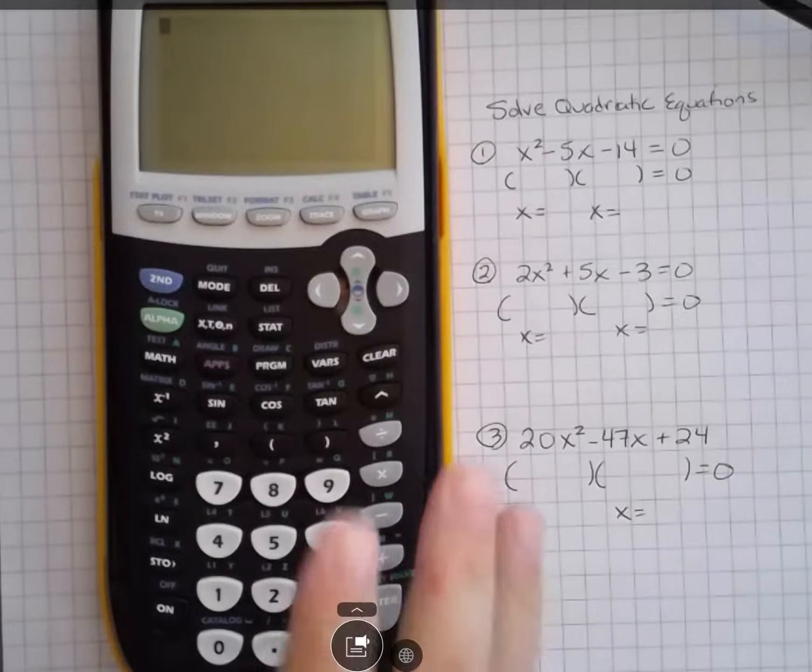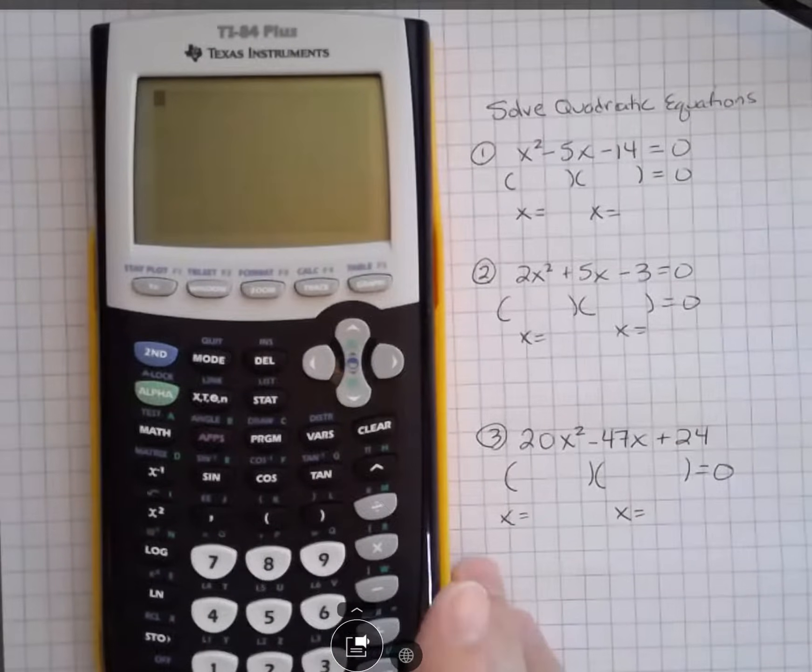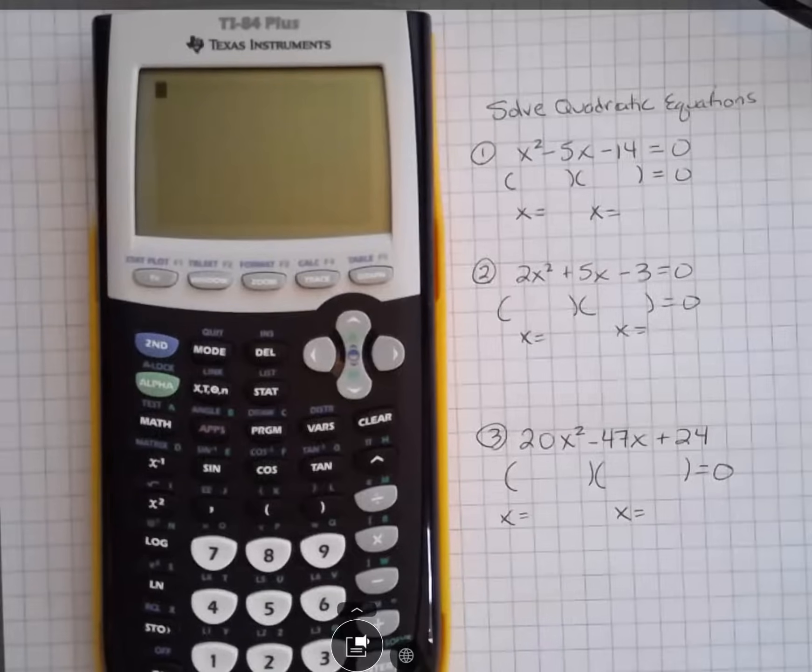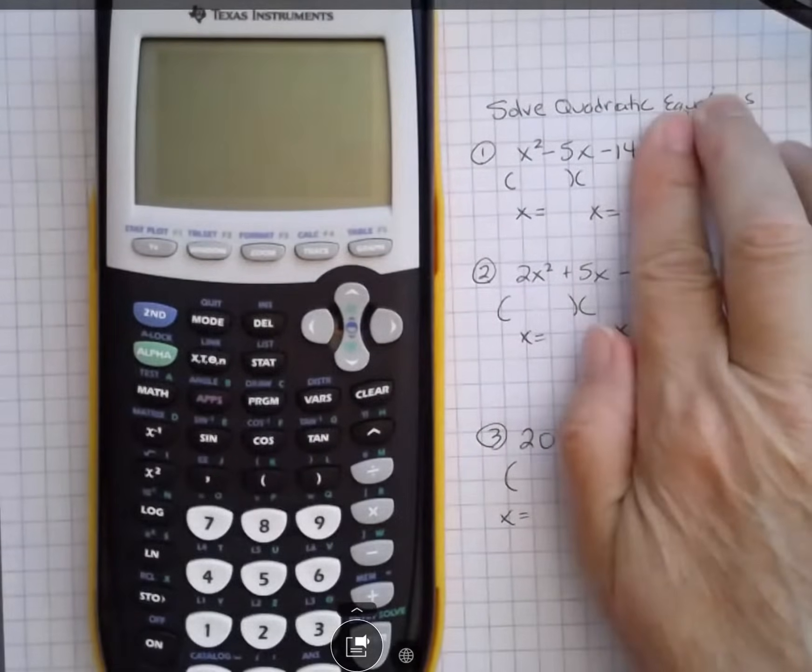Hi, it's Carly McEvoy. I wanted to show you how to use your TI-84 Plus to solve quadratic equations, and in the process you can also find out what the factored form of that expression is—for instance, x squared minus 5x minus 14.